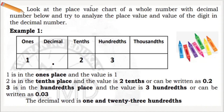Look at the place value chart of a whole number with decimal number below, and then try to analyze the place value and value of each digit. Digit 1 is in the 1's place, and its value is 1.